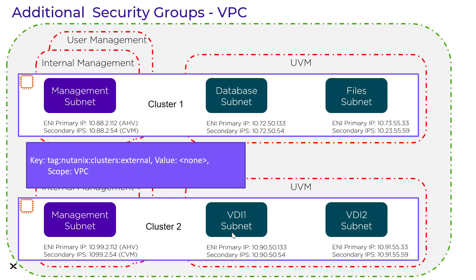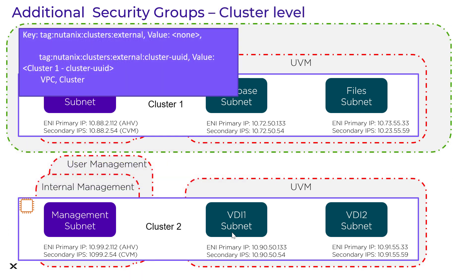In our first example, we're protecting an entire VPC of Nutanix NC2 clusters. The tag is tag:Nutanix:clusters:external, and we leave the value blank in the menu — that protects both cluster one and cluster two. At the cluster level, we keep that initial tag and add a third tag: tag:Nutanix:clusters:external:<cluster UID>. We grab that UID from the NC2 portal, and now we can protect cluster one individually by entering its UID in that field.